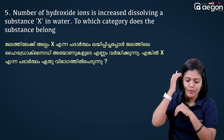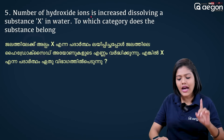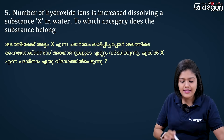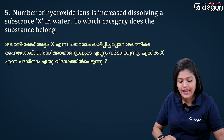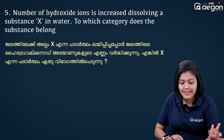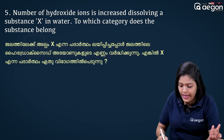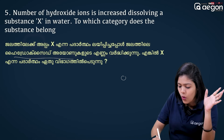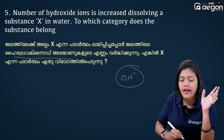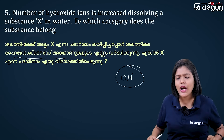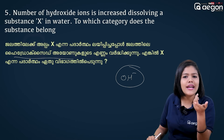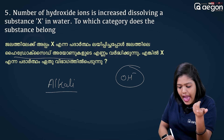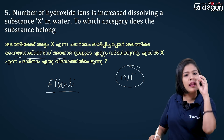The number of hydroxide ions is increased when dissolving a substance X in water. To which category does the substance belong? The hydroxide ions are OH- ions. We call them alkaline ions — it is not a basic ion difference.